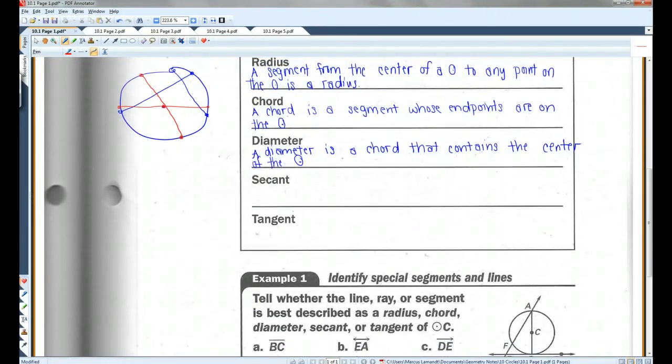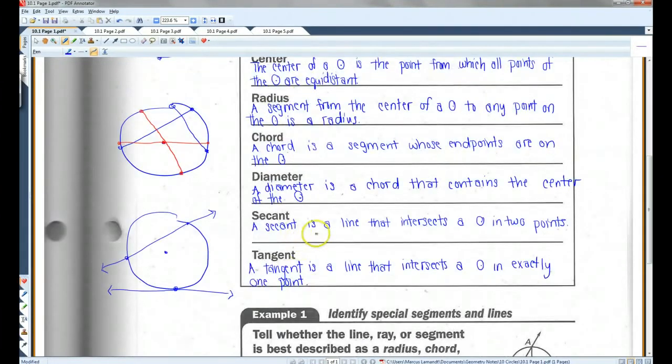Alright, secants and tangents. A secant is a line that intersects a circle in two points. So this line here would be a secant line, because it intersects the circle twice. A tangent is a line that intersects a circle in exactly one point. So like this one here. This would be a tangent line, because it intersects once.